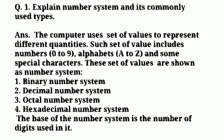The first question is explain number system and its commonly used types. Answer is the computer uses set of values to represent different quantities. Such set of values includes numbers 0 to 9, alphabets A to Z and some special characters. These set of values are shown as number system.